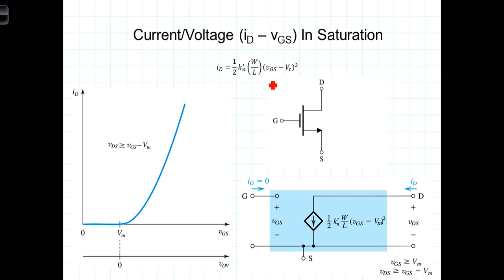As you look at this, this is a function or the equation of a parabola in VGS, offset or shifted to the right by the threshold voltage. So this is the graph of that equation for VDS greater than or equal to VGS minus VT,